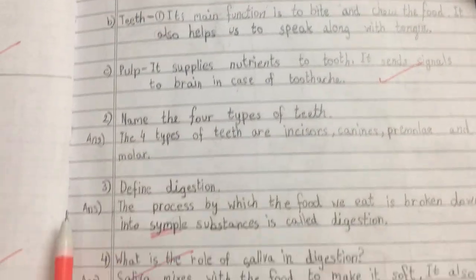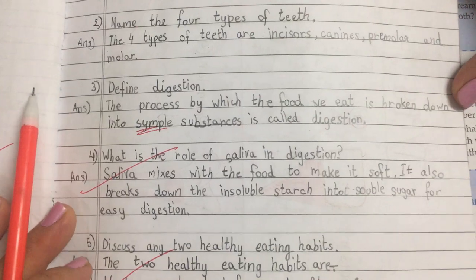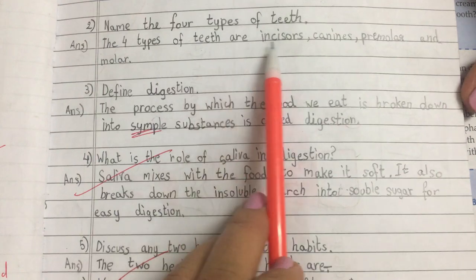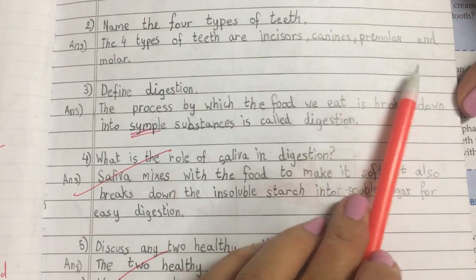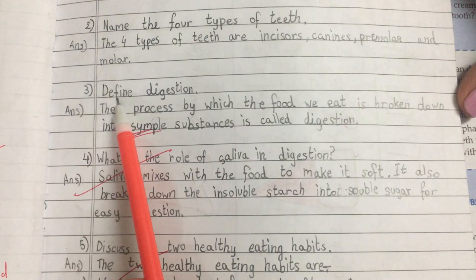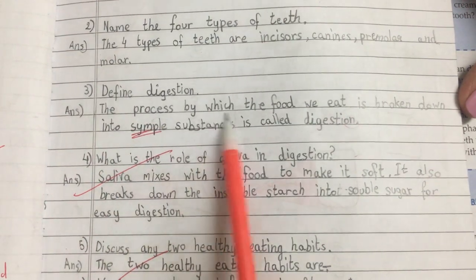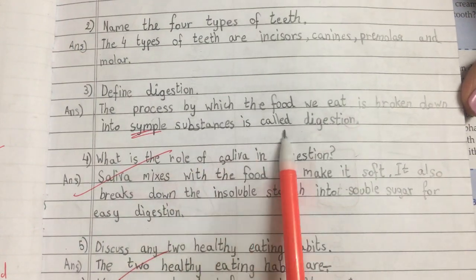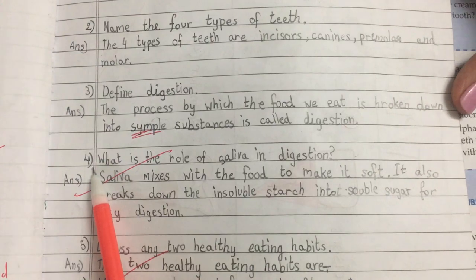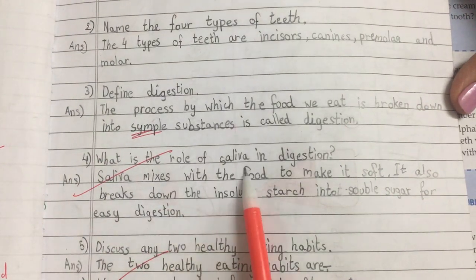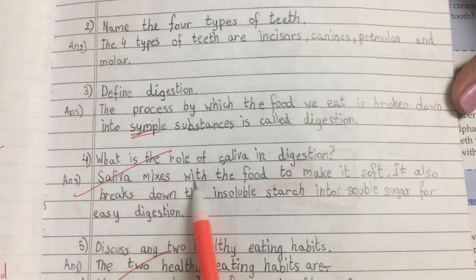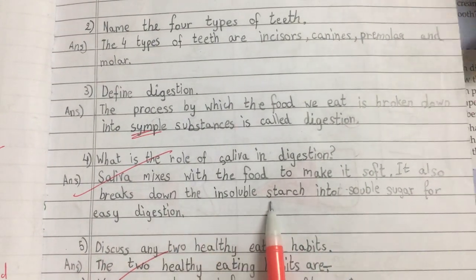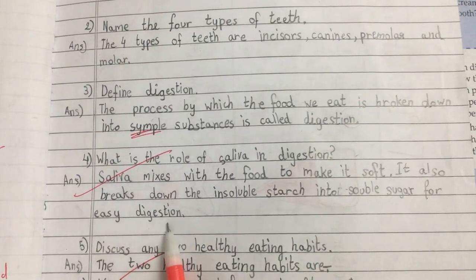Question 2: Name the four types of teeth. Answer: The four types of teeth are incisors, canines, premolars and molars. Question 3: Define digestion. Answer: The process by which the food we eat is broken down into simple substances is called digestion. Question 4: What is the role of saliva in digestion? Saliva mixes with the food to make it soft. It also breaks down the insoluble starch into soluble sugar for easy digestion.